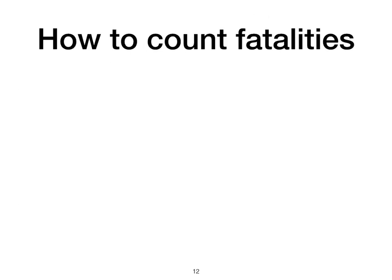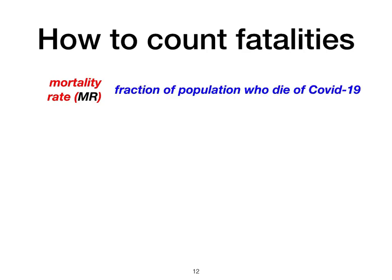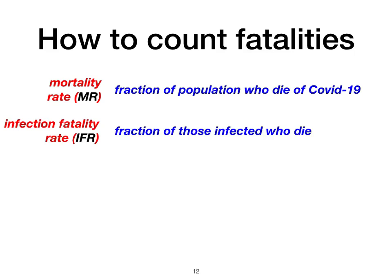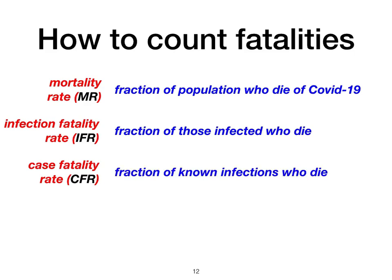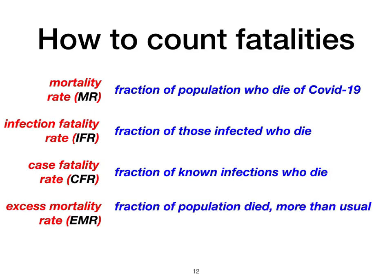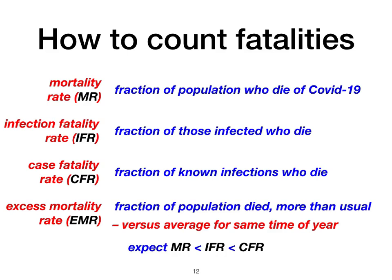Let's move on to how we count fatalities. First, there's mortality rate (MR) — the fraction of the overall population who died of a particular cause, here COVID-19. Then there's infection fatality rate (IFR) — the fraction of those actually infected who die. The case fatality rate (CFR) is the fraction of known infections who die, and that is generally lower than the IFR because you don't have perfect testing. And the excess mortality rate (EMR) is the fraction of the population who died over and above the number you'd usually expect for that time of year. We'd expect MR to be less than IFR, which you'd expect to be less than CFR.